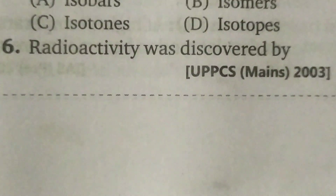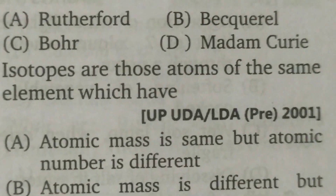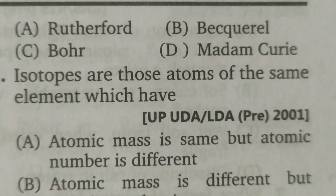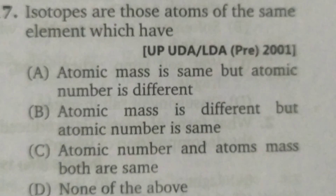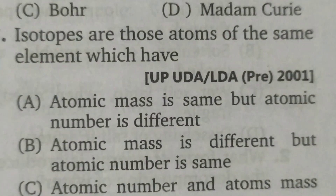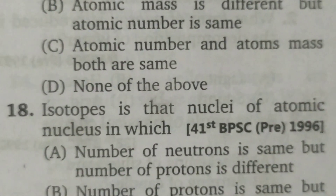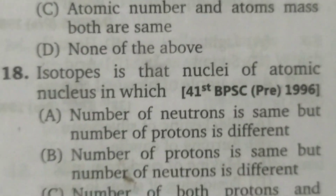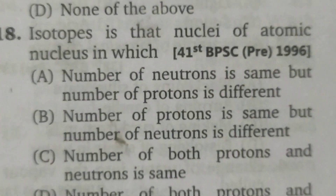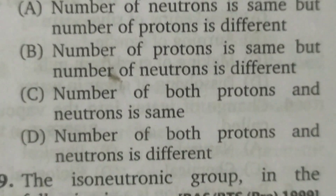Radioactivity was discovered by Becquerel. Isotopes are atoms of the same element which have different atomic mass but the same atomic number. Isotopes are nuclei in which the number of protons is the same but the number of neutrons is different.